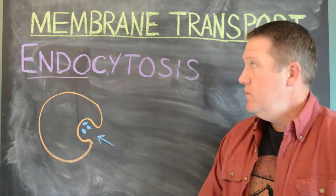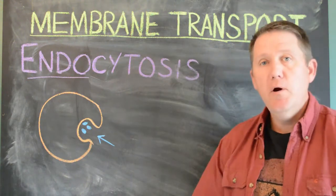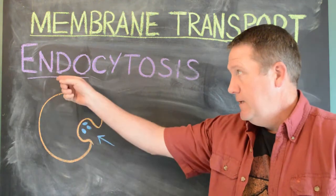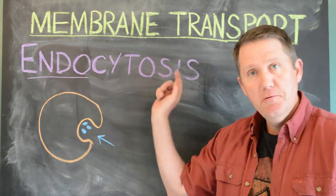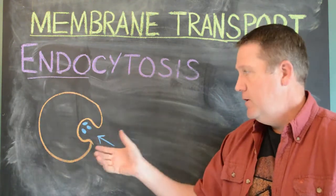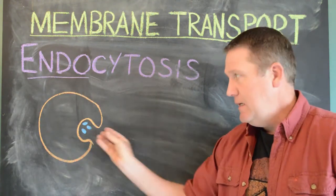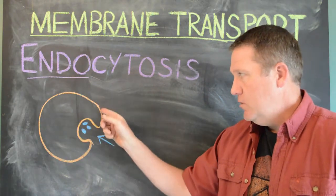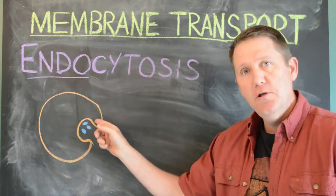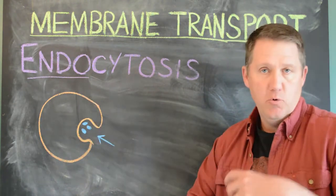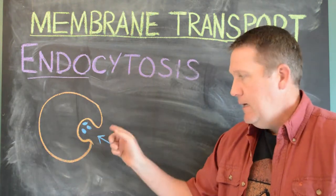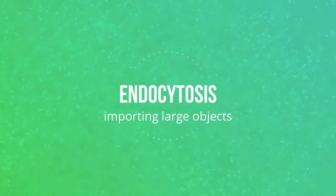Our final version of membrane transport is endocytosis — transport into the cell. If you have large objects that need to get into the cell but you can't make a hole in the membrane without ruining the structural integrity of the cell, endocytosis is the answer. Let's take a closer look.